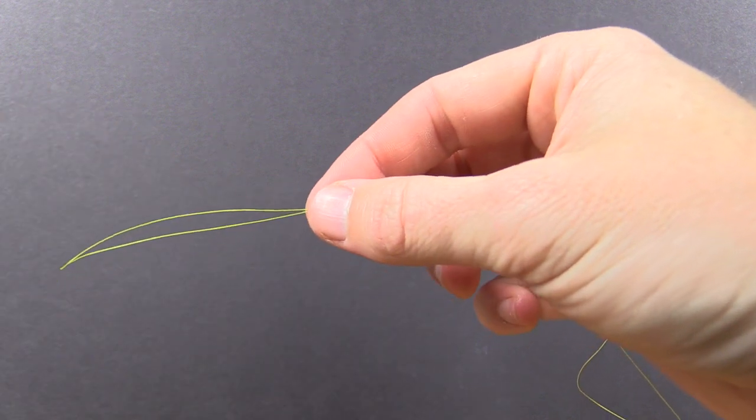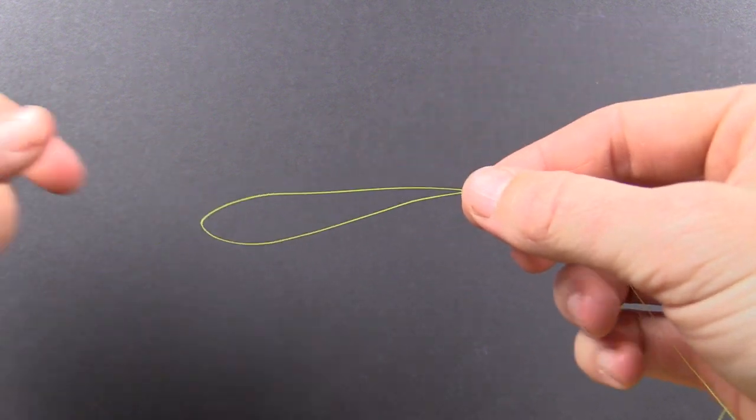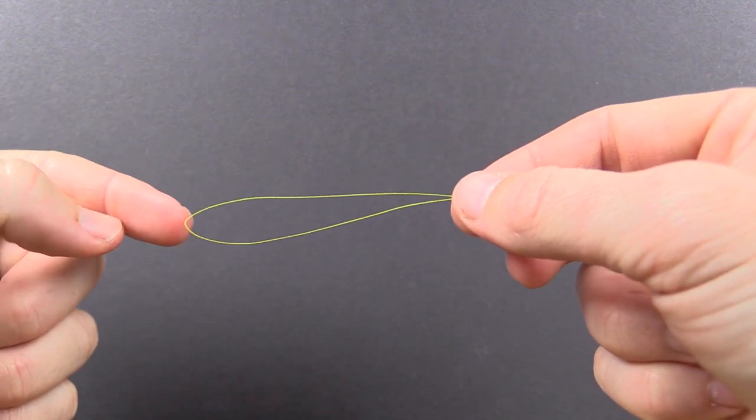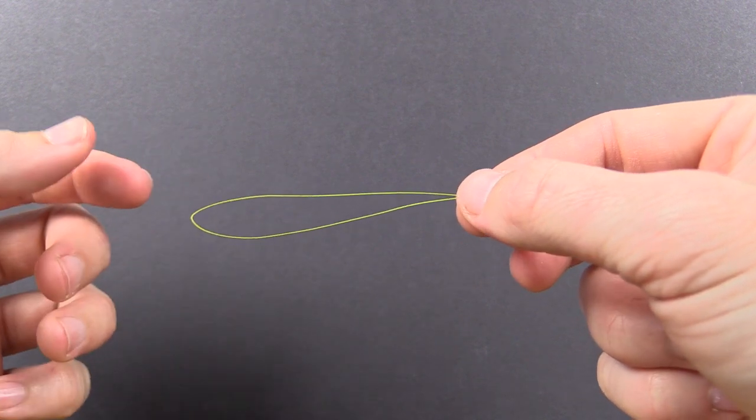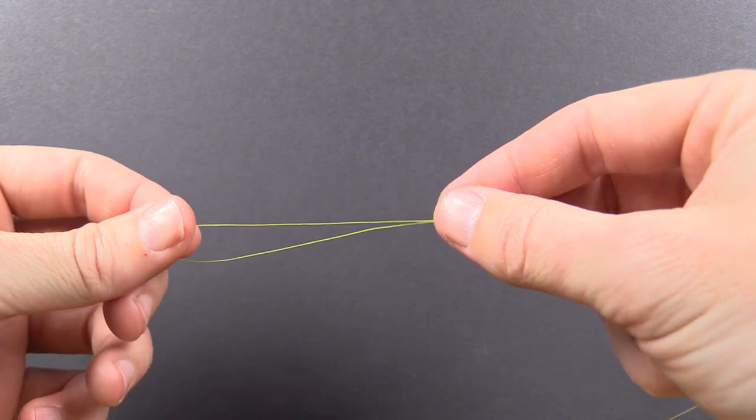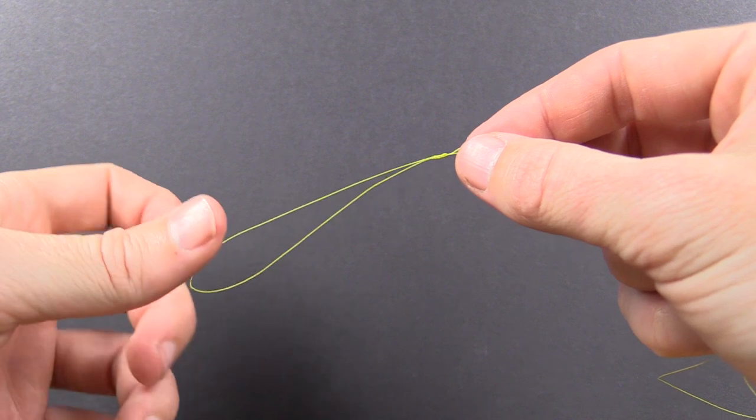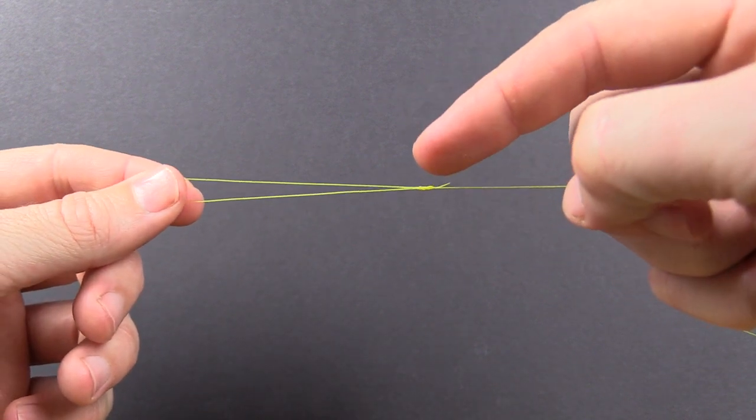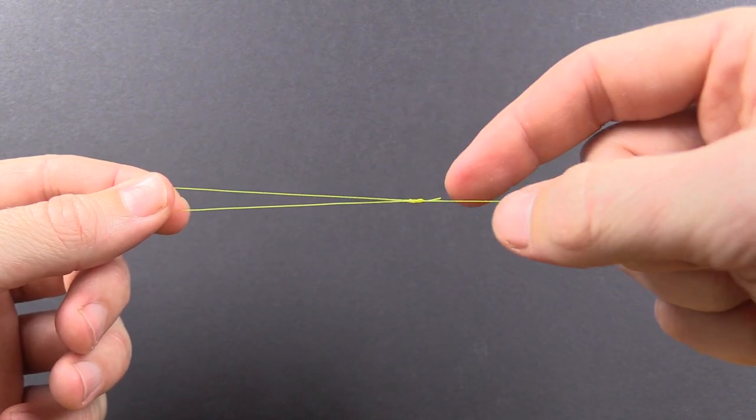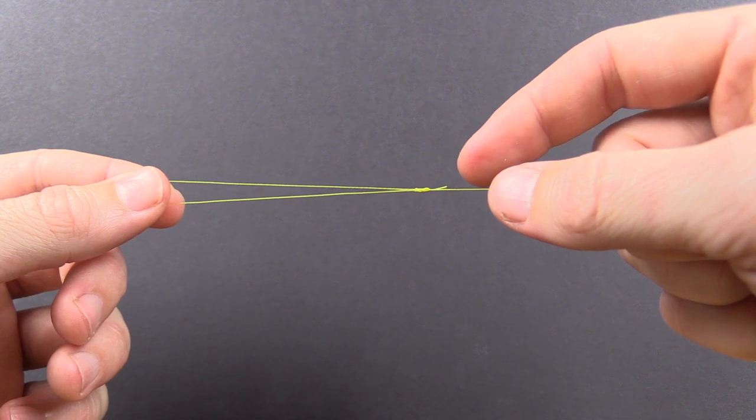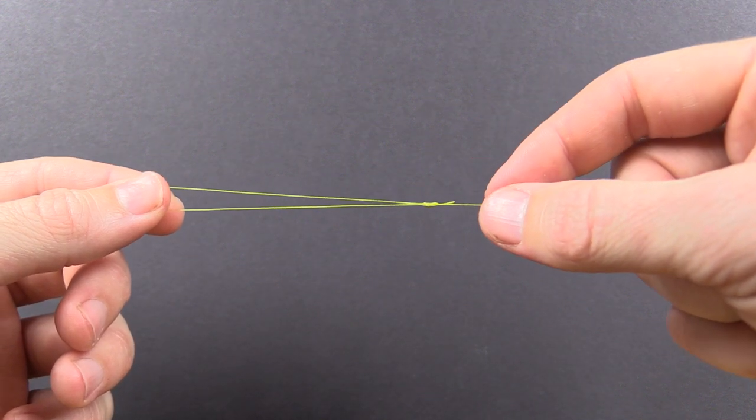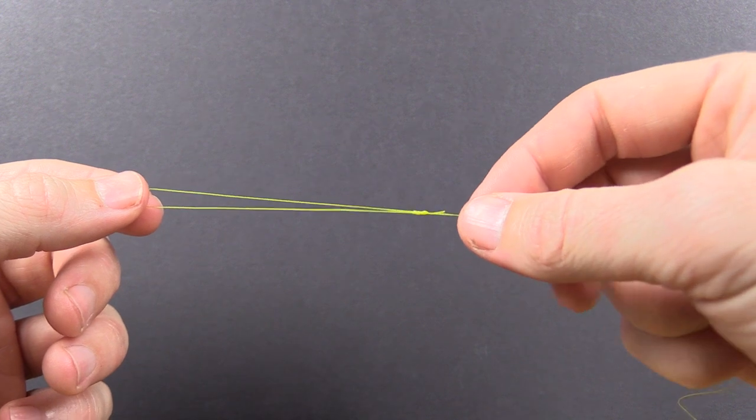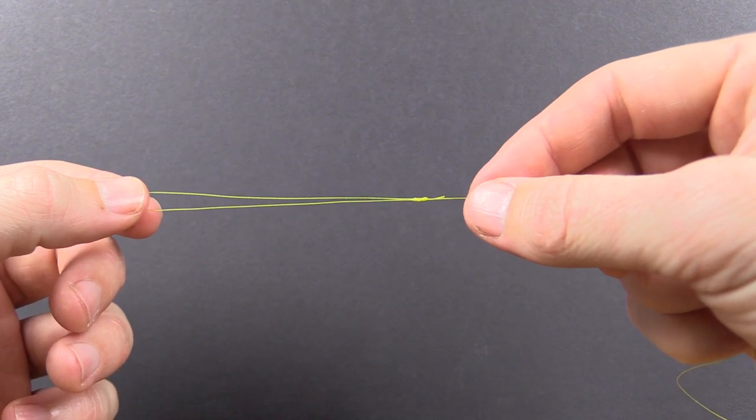And then, the next step for the final line to line connection would be to use this loop to tie a connection. You can use a variety of different knots, but what I'm going to do is I'm doing a test on the strength of this spider hitch compared to the Bimini twist, also compared to some other knots that are supposed to be really good loop knots like the surgeon knot and one other one.